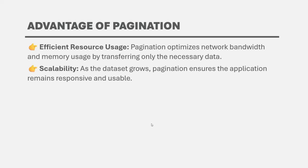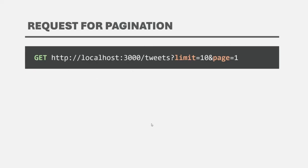When requesting data from the client, with the request we can also specify the page number and the number of records we want in the response for that page. When we are making a GET request to get all the tweets, with that GET request we are also specifying some query parameters. Here we have two query parameters: limit and page. You can name these query parameters anything based on your requirement, but here I am calling them limit and page. This limit query parameter tells how many records we want per page — here I have specified it as 10, meaning per page we are requesting 10 records.